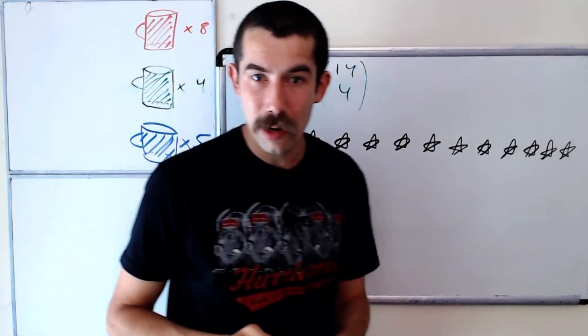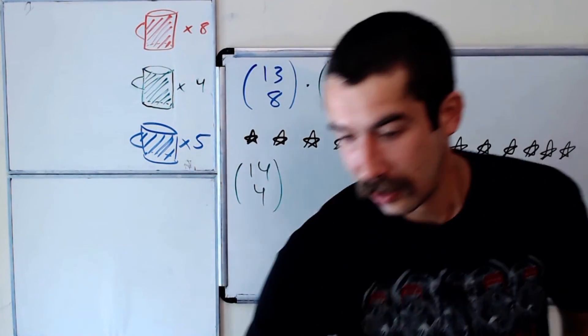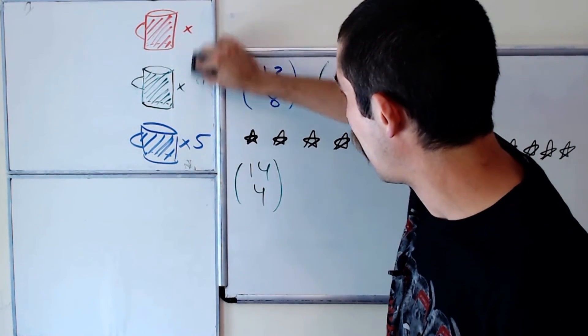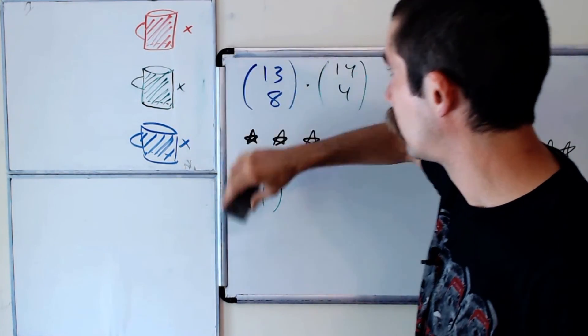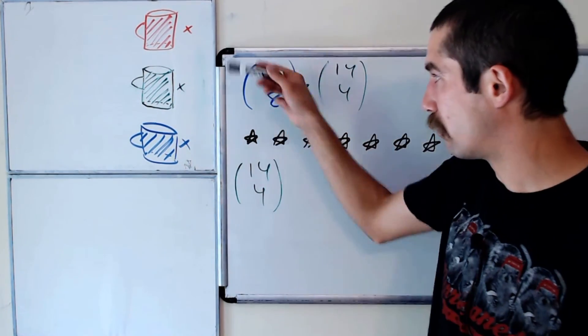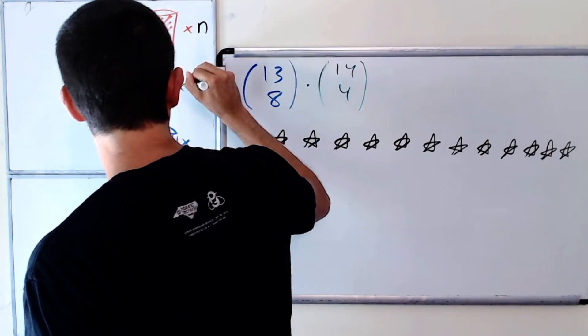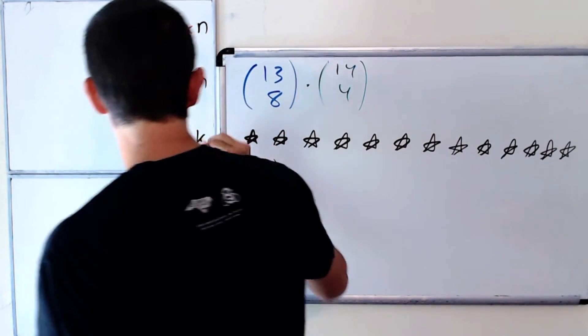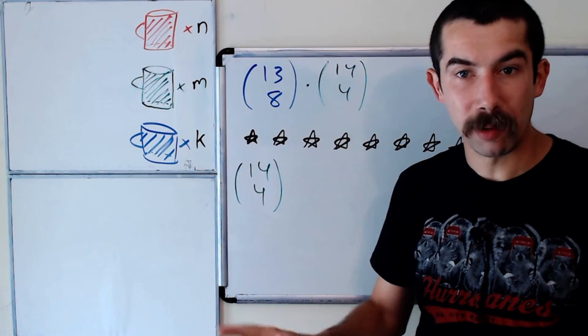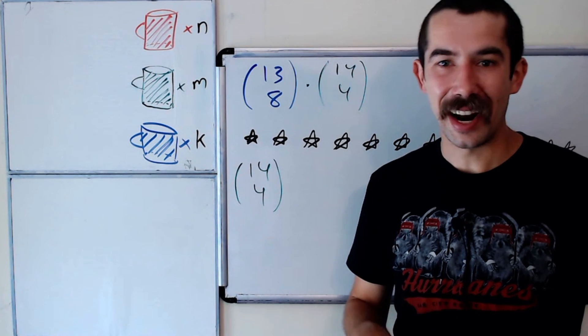So now my question for you, and I would like somebody to put the answer in the comments, and I'll pin the best answer: what happens if we change these numbers? Instead of having five, four, and eight, or eight, five, and four, what if we used n, m, and k with the same rules, so no green next to green. So let me know in the comments if you're able to solve this one, and I'll pin the best answer.